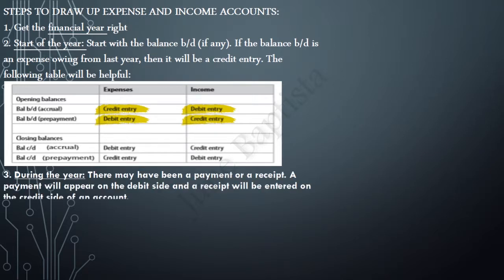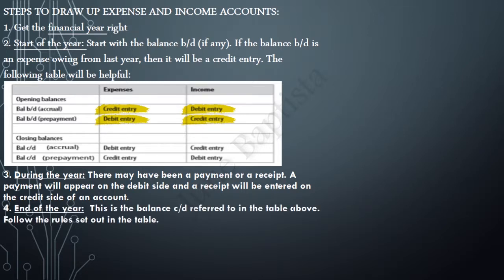Step 3: If the figure refers to what has been paid or received during the year, remember a payment will always appear on the debit side of an account and a receipt will always appear on the credit side of an account. Step 4: If the figure refers to the end of the year or a balance carried down, go back to the table and look at closing balances.